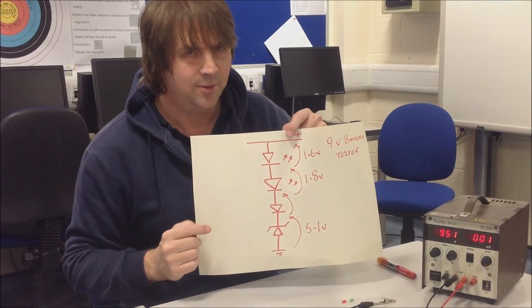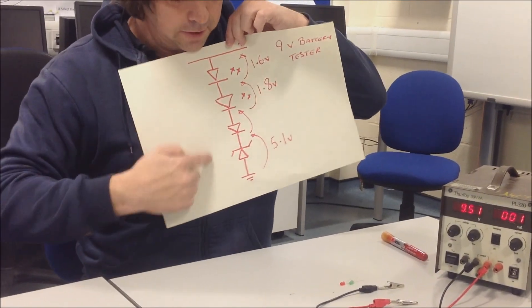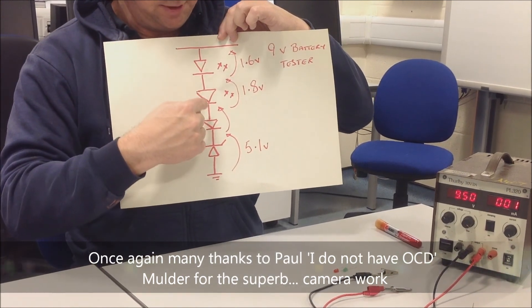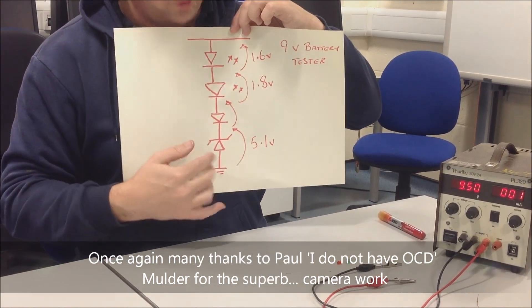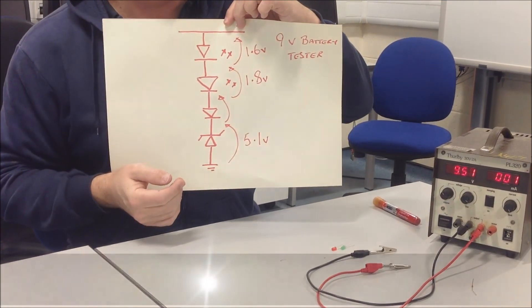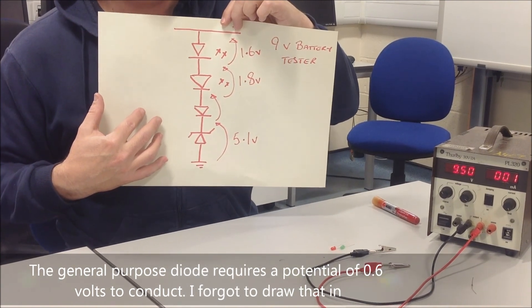My objective cameraman, being objective, said that I should show this circuit diagram here. So you can see we've got the Zener, normal general purpose diode, LED, LED, all badly drawn. But you can see the voltages across each of them. And they total to about 9 volts, give or take. An LED will require about 5 milliamps to light.